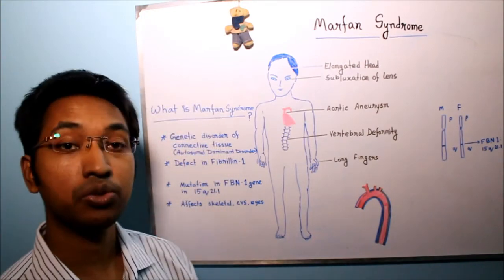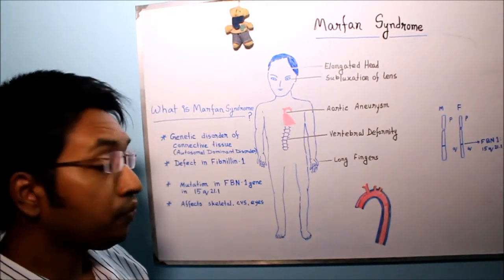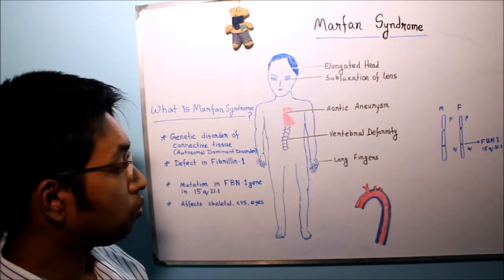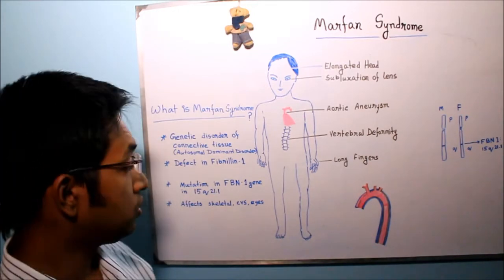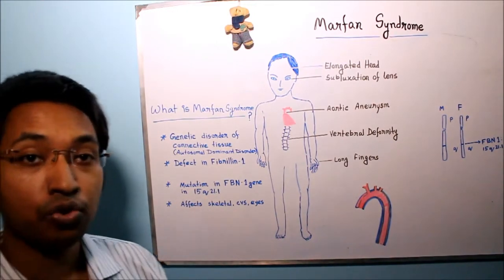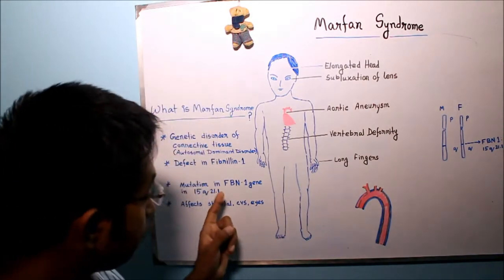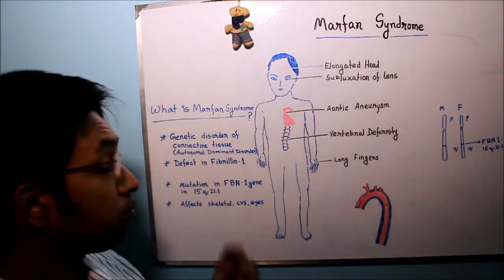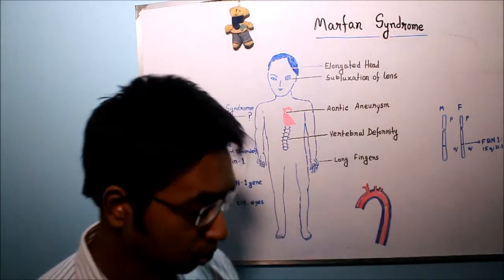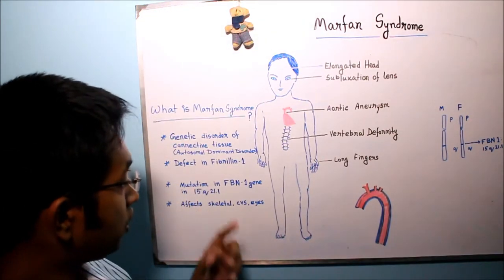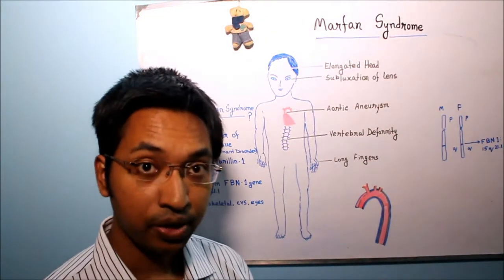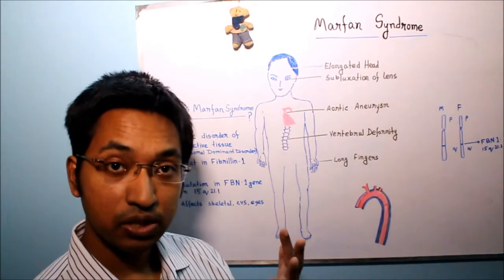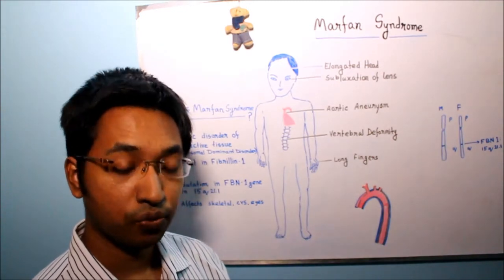Marfan syndrome occurs due to a mutation in the FBN1 gene, located on the long arm of chromosome 15. This FBN1 gene is responsible for encoding the fibrillin-1 glycoprotein. So whenever there is a mutation in FBN1, there is a defect in fibrillin-1, resulting in the development of Marfan syndrome.